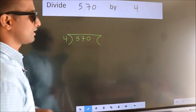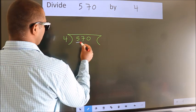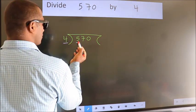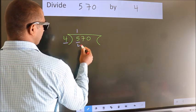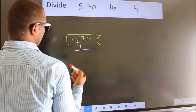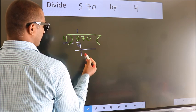Next, here we have 5, here 4. A number close to 5 in the 4 table is 4 times 1 equals 4. Now we should subtract. We get 1.